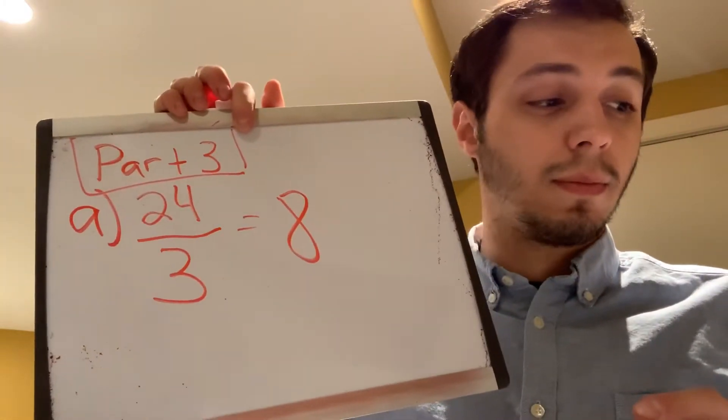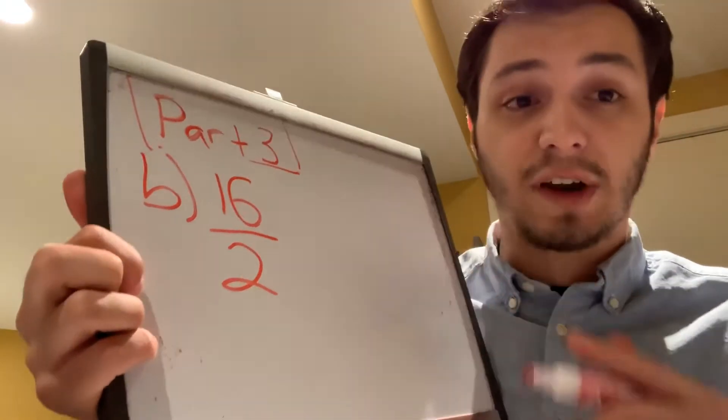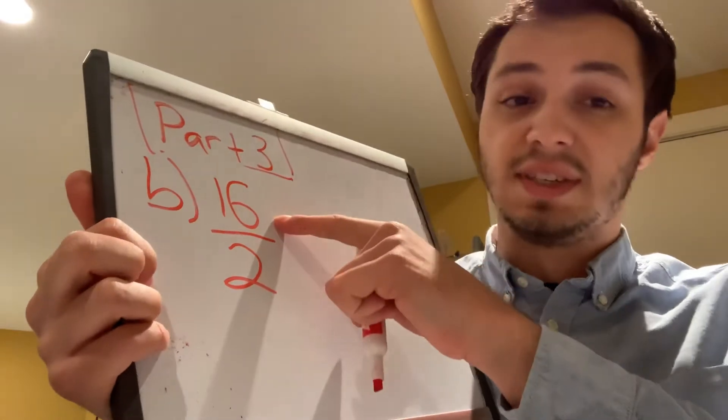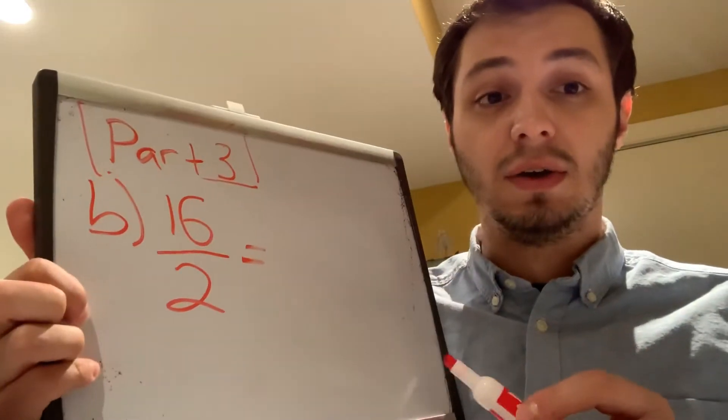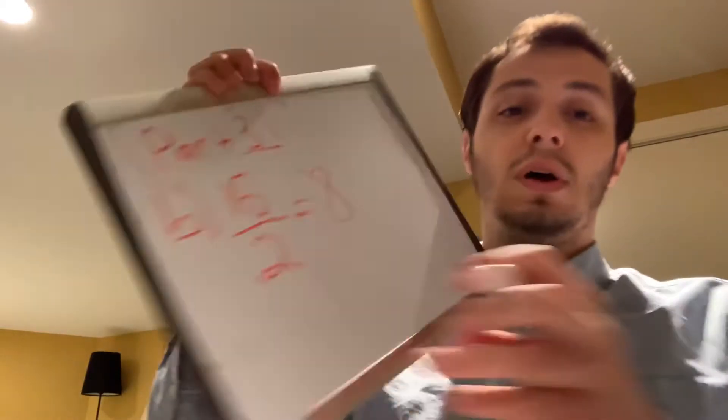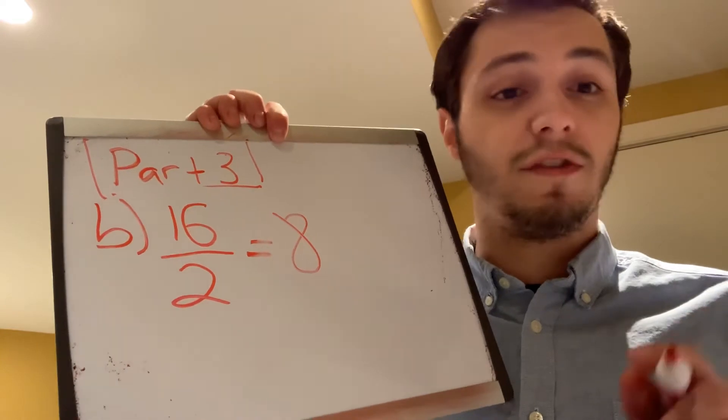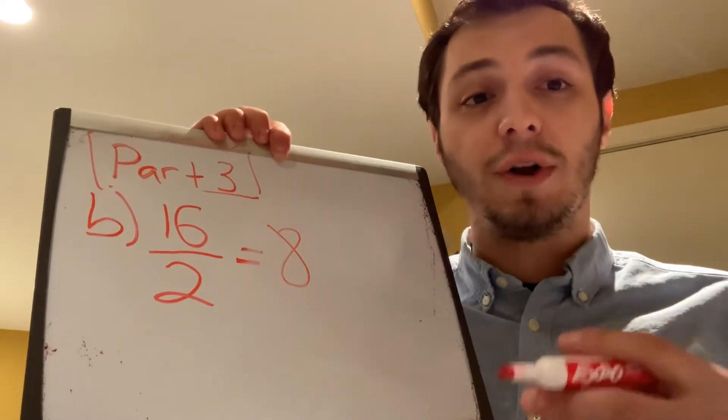For part B, the fraction is 16 over 2, which can be read as 16 divided by 2. Skip count by 2s until you reach 16: 2, 4, 6, 8, 10, 12, 14, 16 — so the answer is 8. Two goes into 16 eight times. I want you to complete the other problems and figure out the whole number for each fraction or division problem. Pause the video and I'll meet you in part 4.